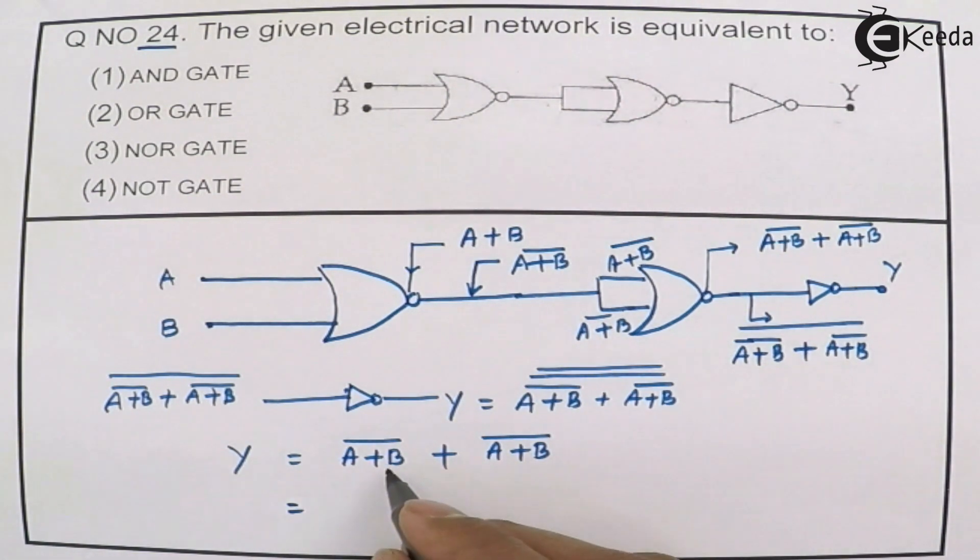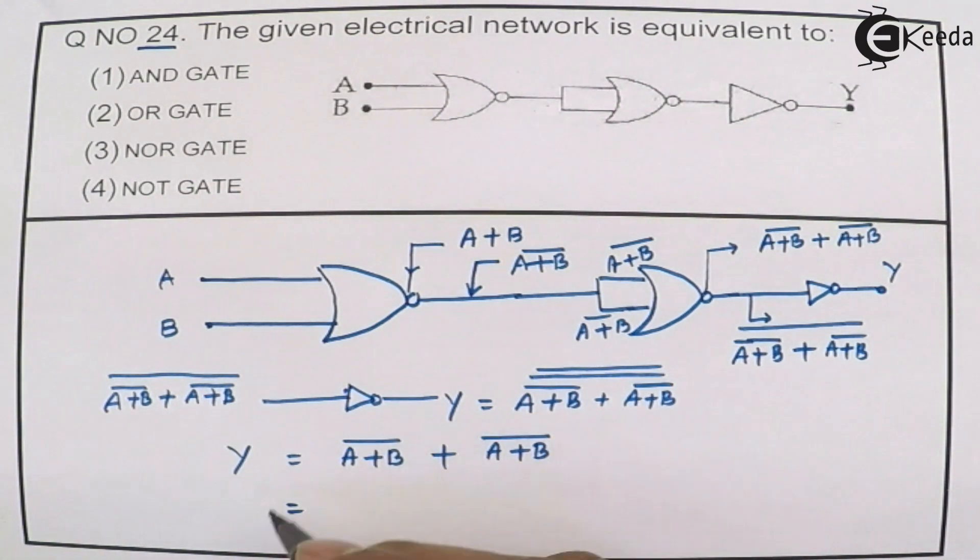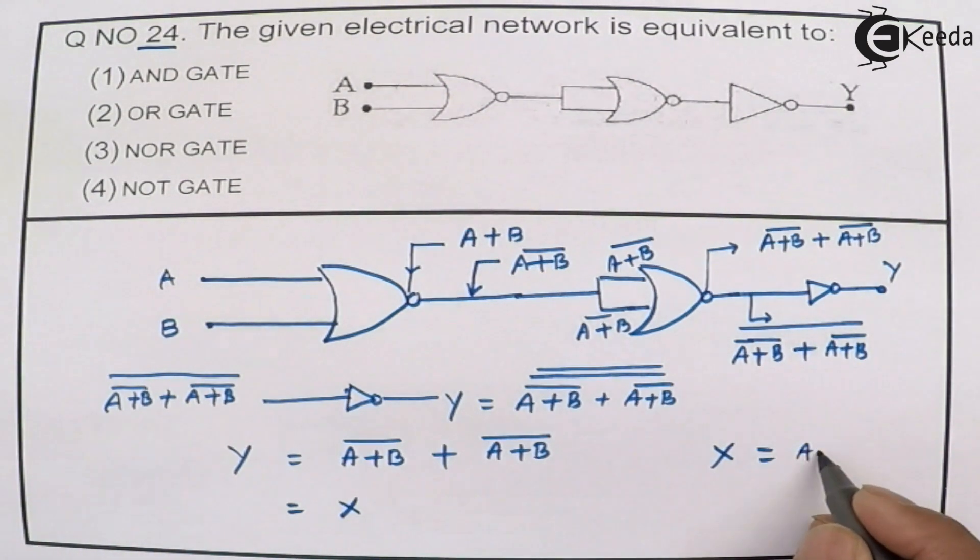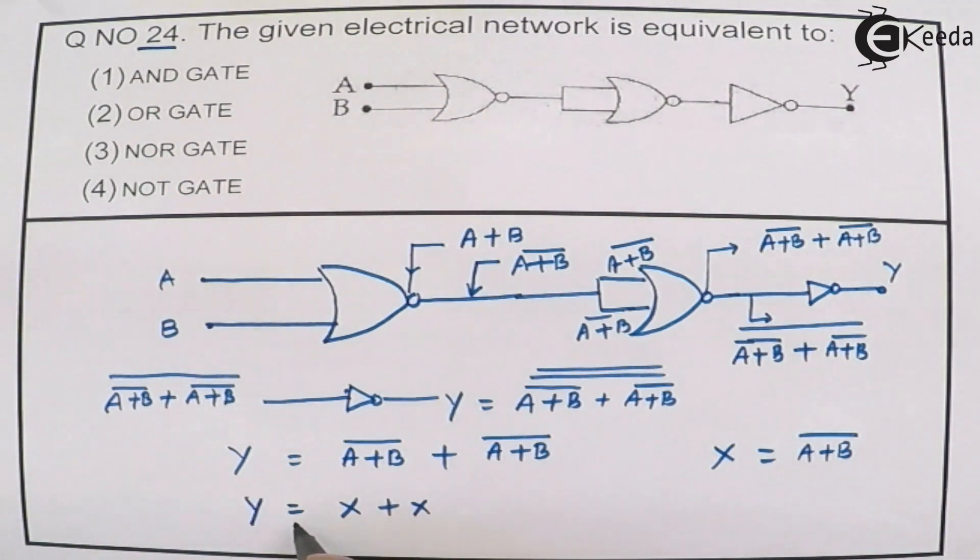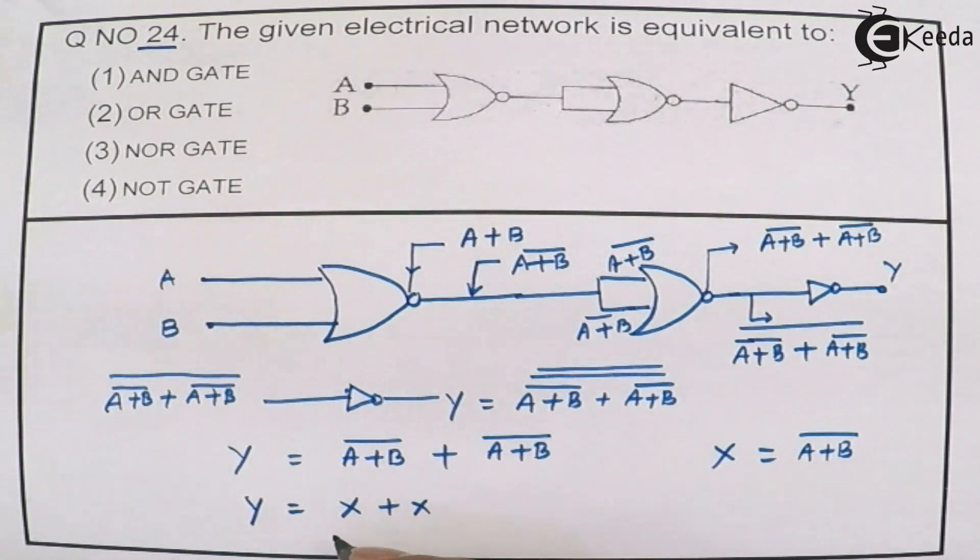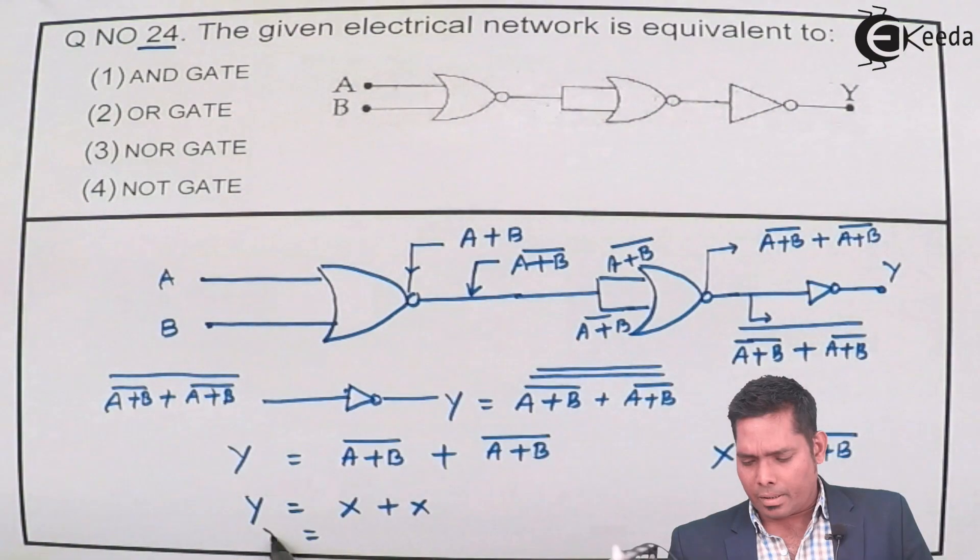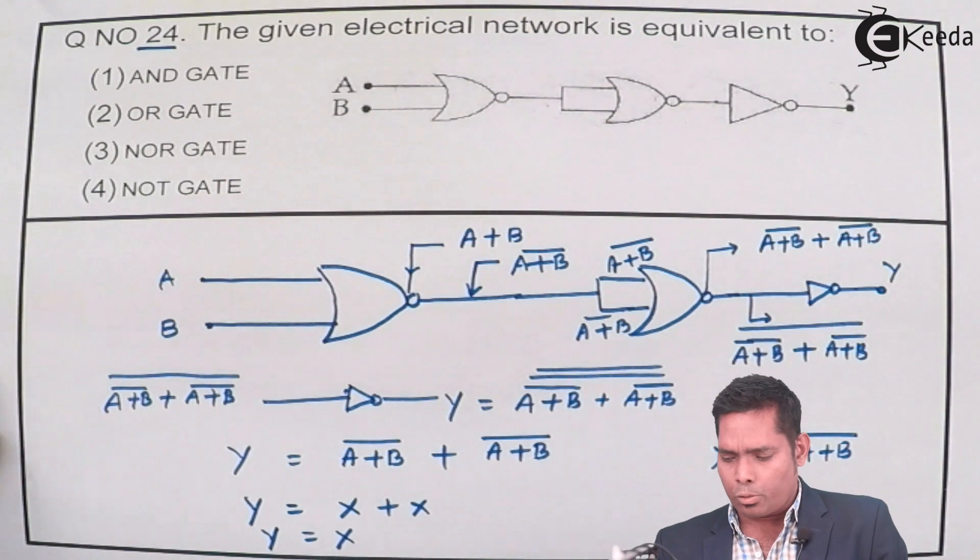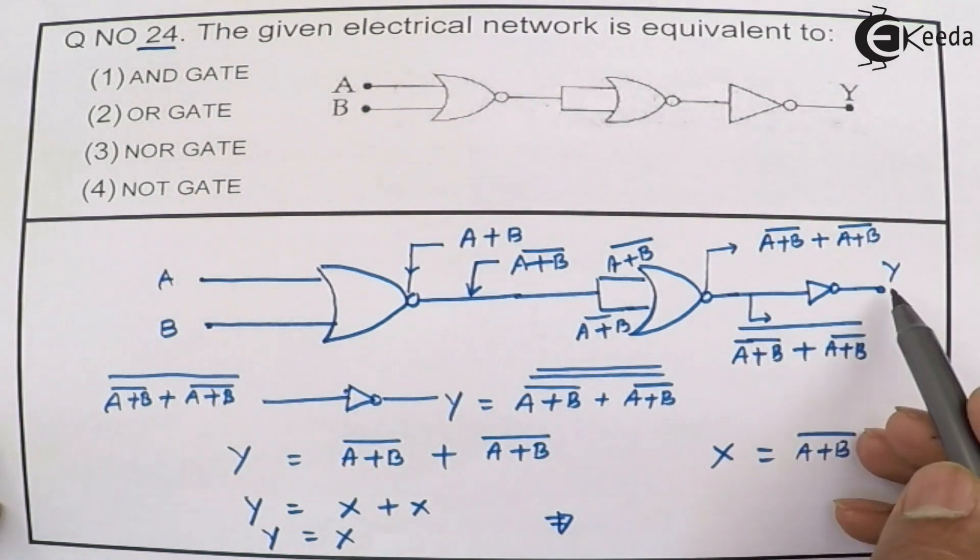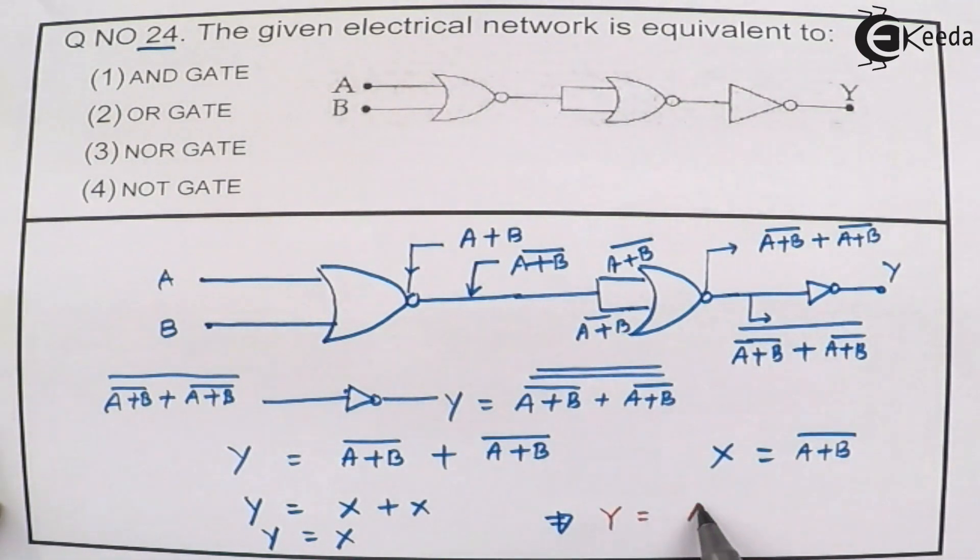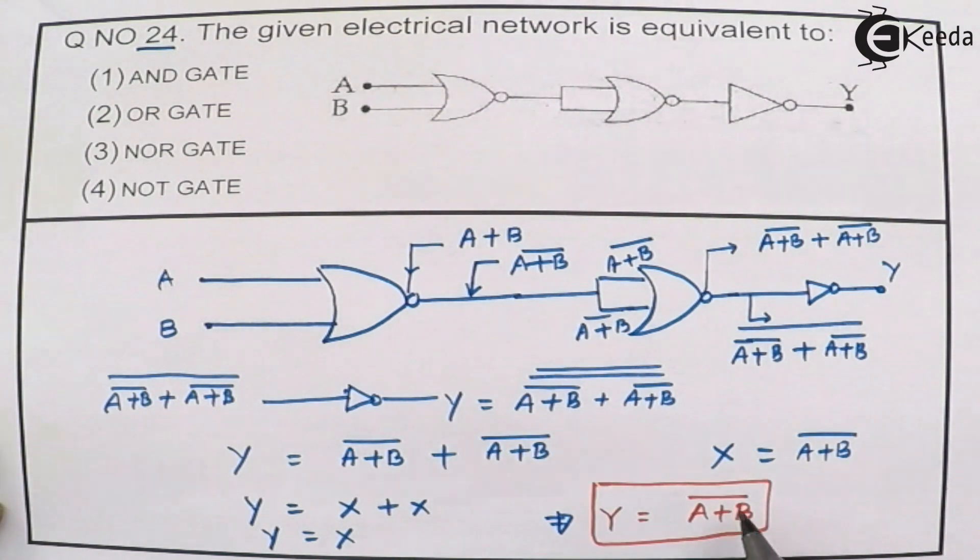Now suppose this is X - suppose that X is A plus B bar. Then if Y is X plus X, then the boolean algebra says Y equals to X. So this is the output we're getting, and X is this one. This implies that the Y I'm getting here is X, that is A plus B bar. This is the answer.